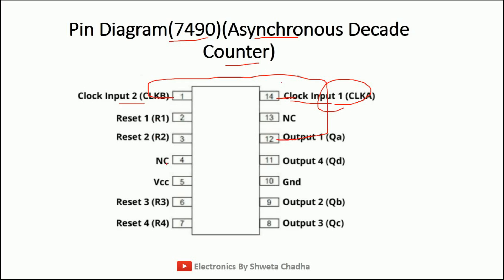PIN 4 is no connection. PIN 5 is VCC. PINs 6 and 7 are also reset PINs, hence connected with ground. PINs 8 and 9 are output signals. PIN 10 is ground. PINs 11 and 12 are output signals. PIN 13 is no connection. PIN 14 is clock signal number 1. The total number of input signals in 7490 is just 1 — that is clock — because a counter only counts clock signals. The 4 output signals are QA, QB, QC, and QD, which count from 0000 to 1001 (0 to 9).